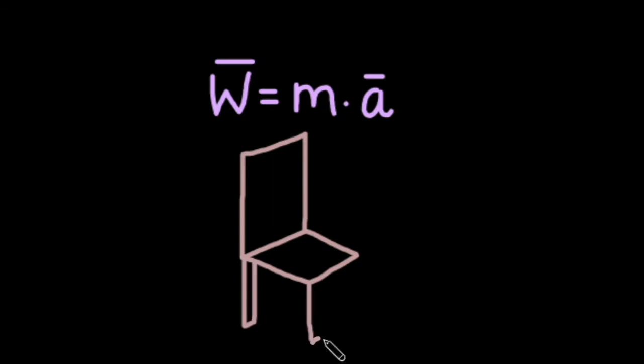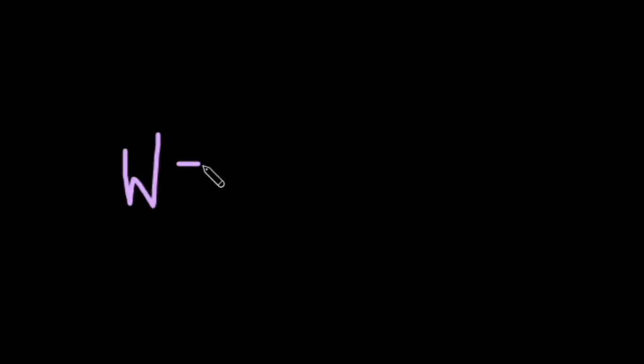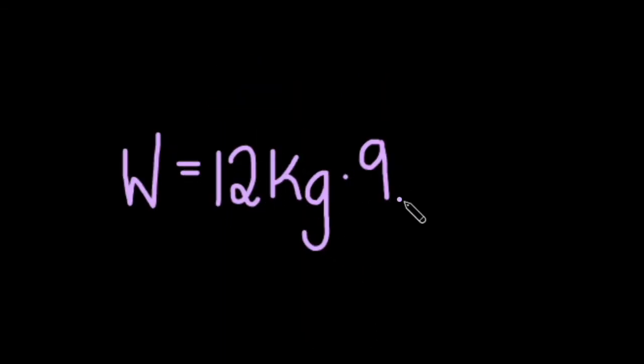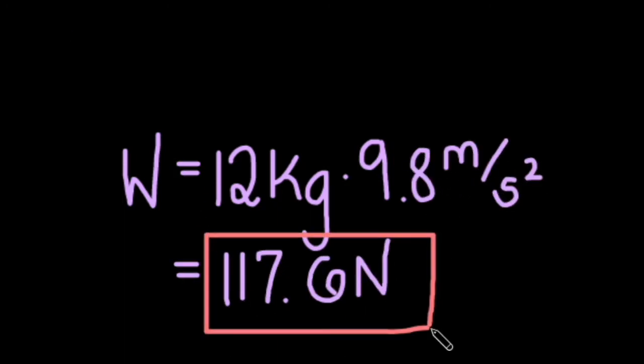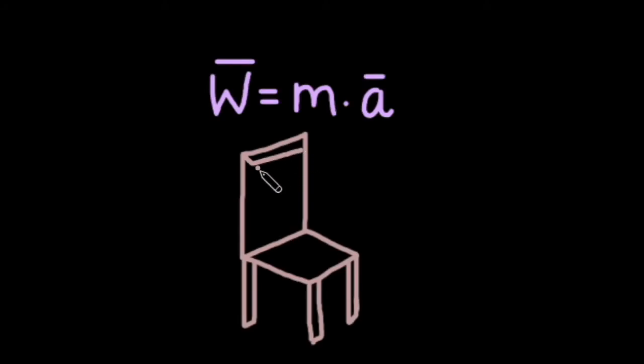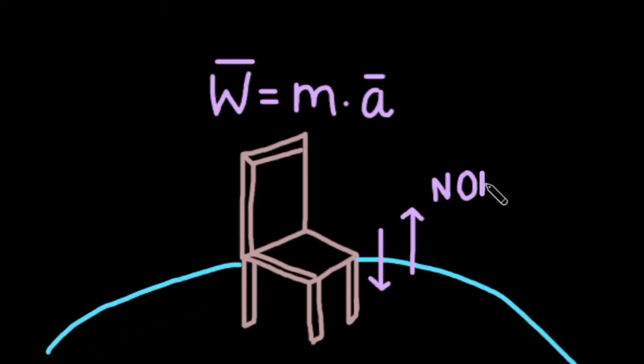So the weight of a 12 kilogram chair on Earth is 12 kilograms times 9.8 meters per second squared, or about 117.6 newtons. According to Newton's third law, the Earth reacts to the chair with the same force. We call this upward force exerted by the Earth the normal force.